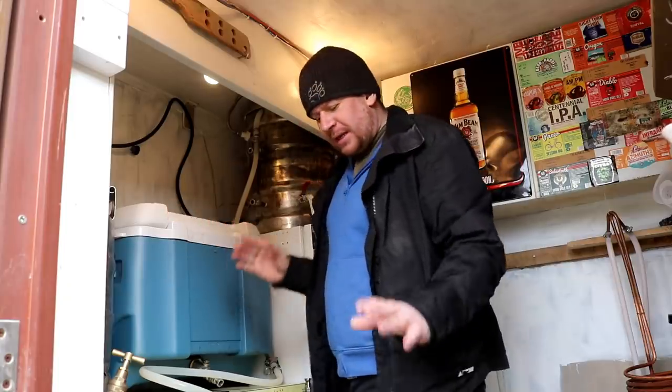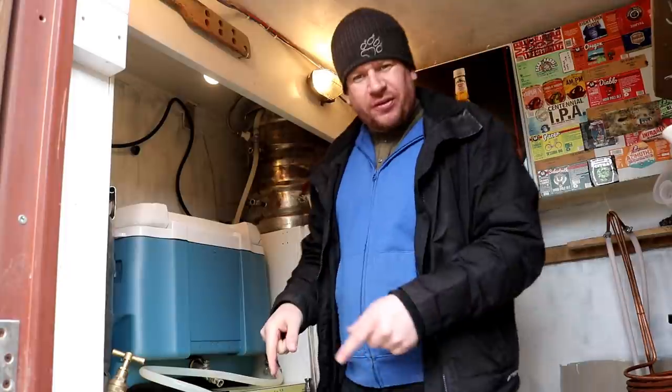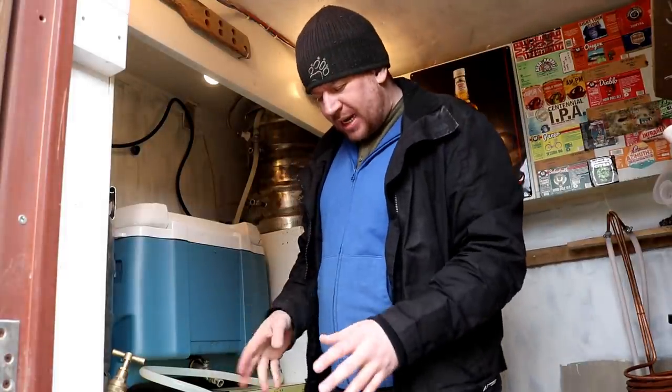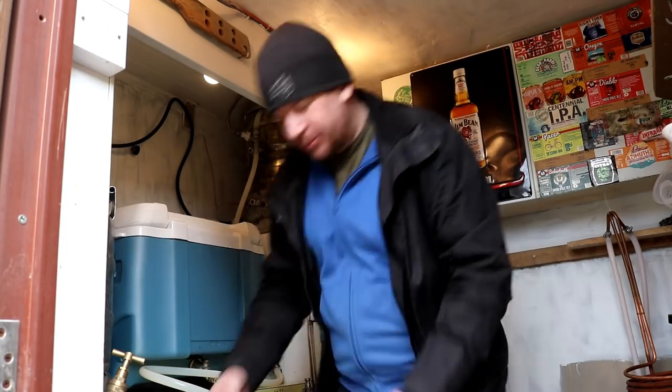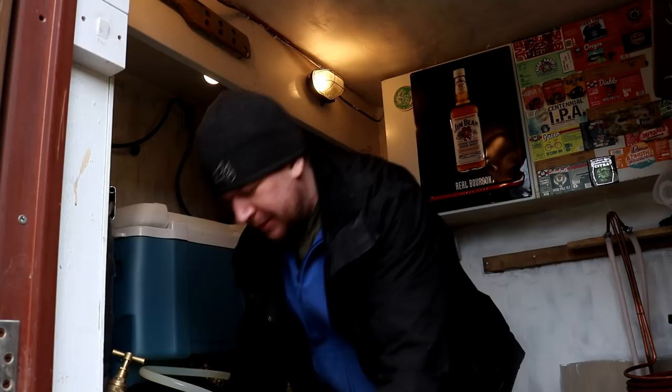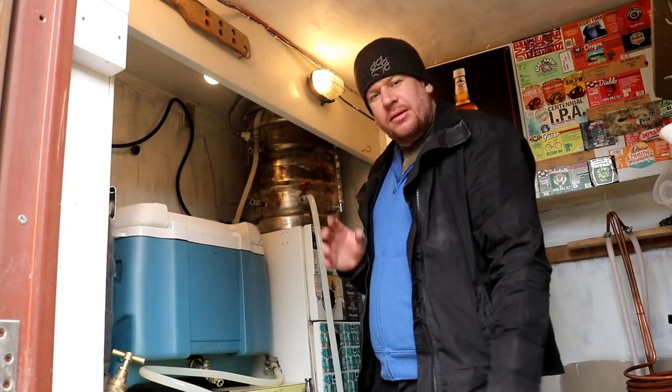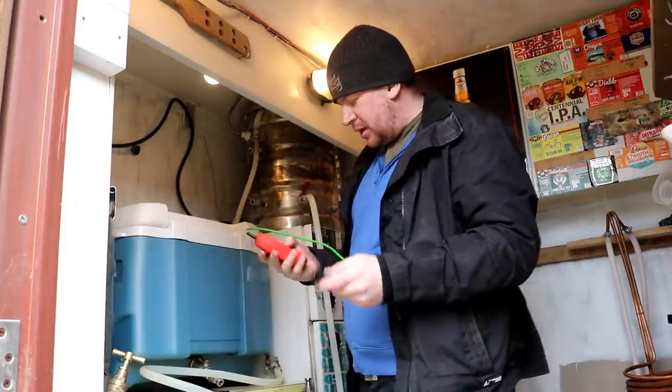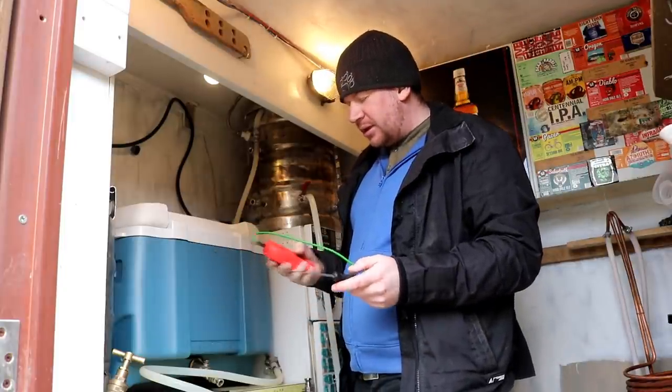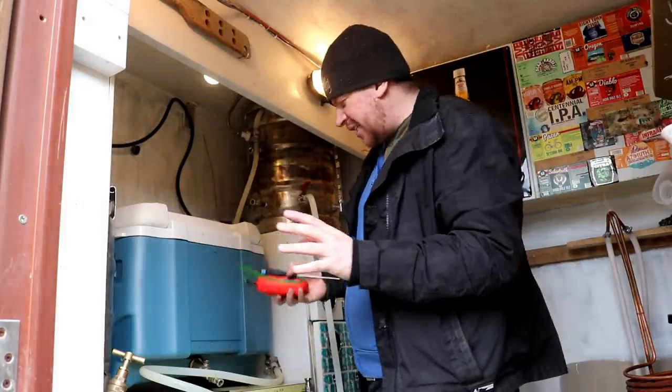We're completely cleaned up in here now. I've just filled the fermenter with Star San, a no-rinse sanitizer. We're going to sit that outside, give it a shake, and let it sanitize, kill all the nasties within this fermentation bucket. It's a big boy and we're about to mash in, so I'll get the thermometer out. I think we're looking for a mash-in temp of 64 or 65 degrees.